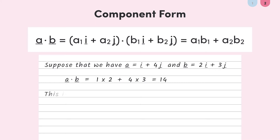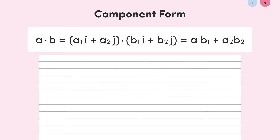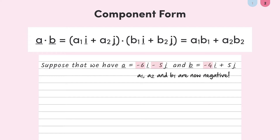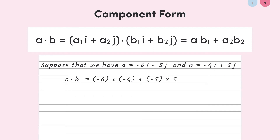The only place where you have to be a little careful with the dot product is when negatives are involved. Take this example in the component form: when the minus sign appears, remember that the number in front of the i in vector A isn't just 6, it's negative 6. So our resulting dot product will be negative 6 times negative 4 plus negative 5 times 5, which is 24 minus 25, giving negative 1. The dot product can definitely be negative.